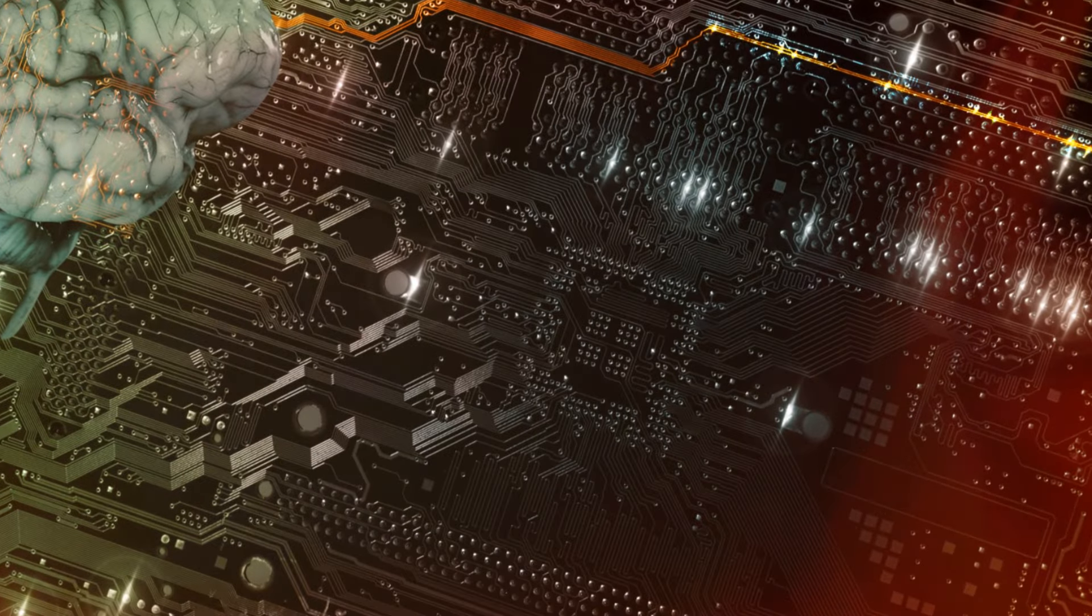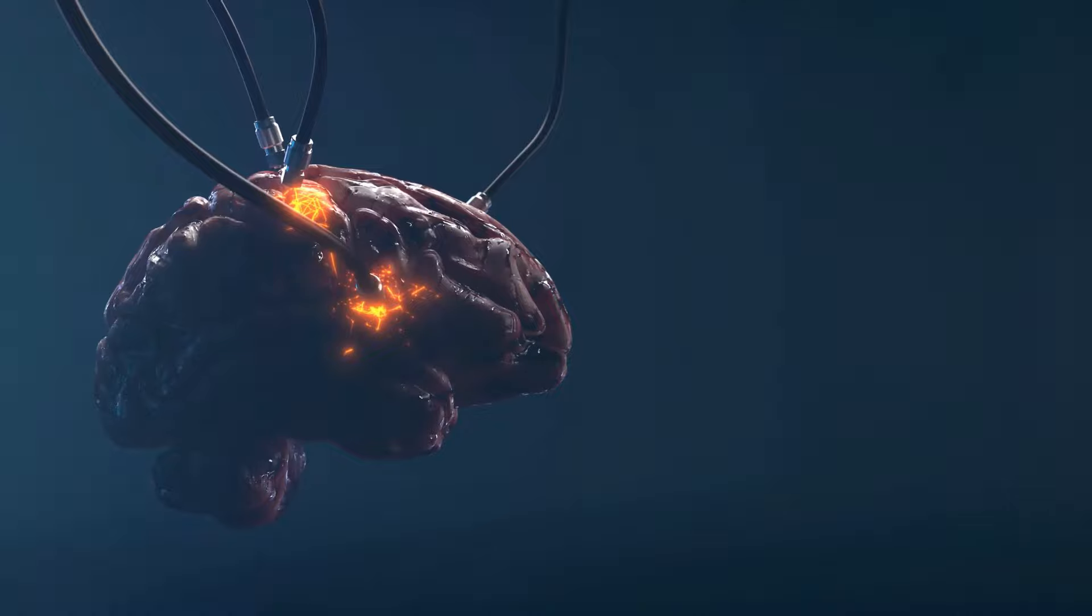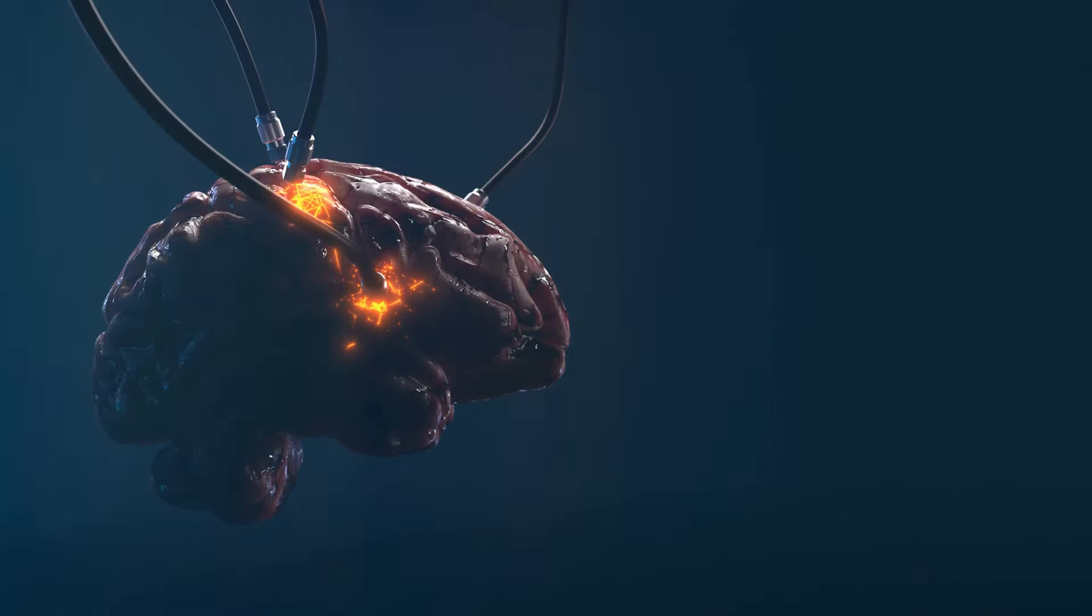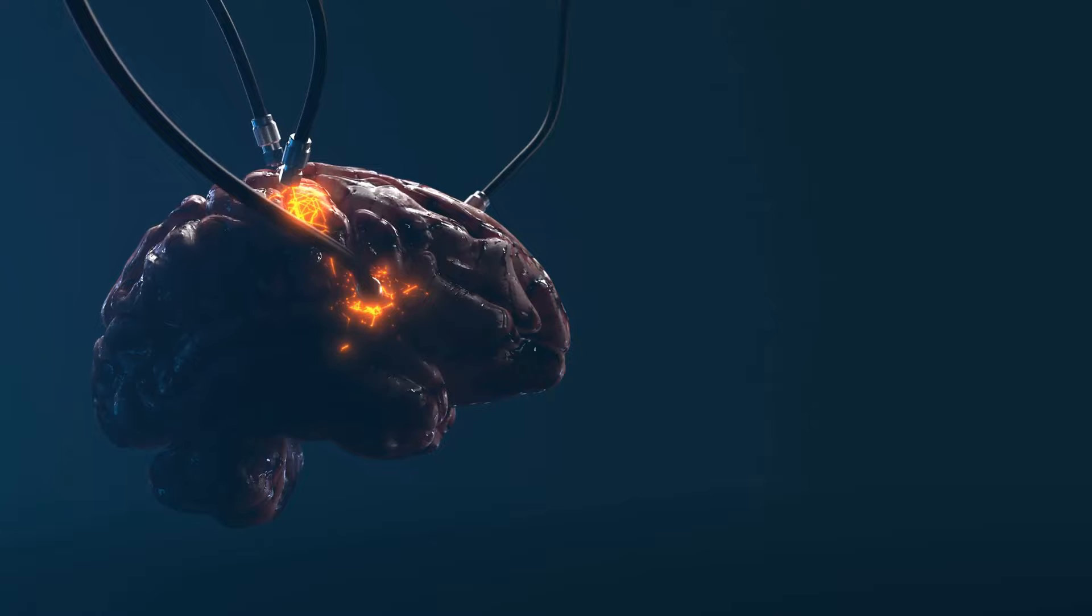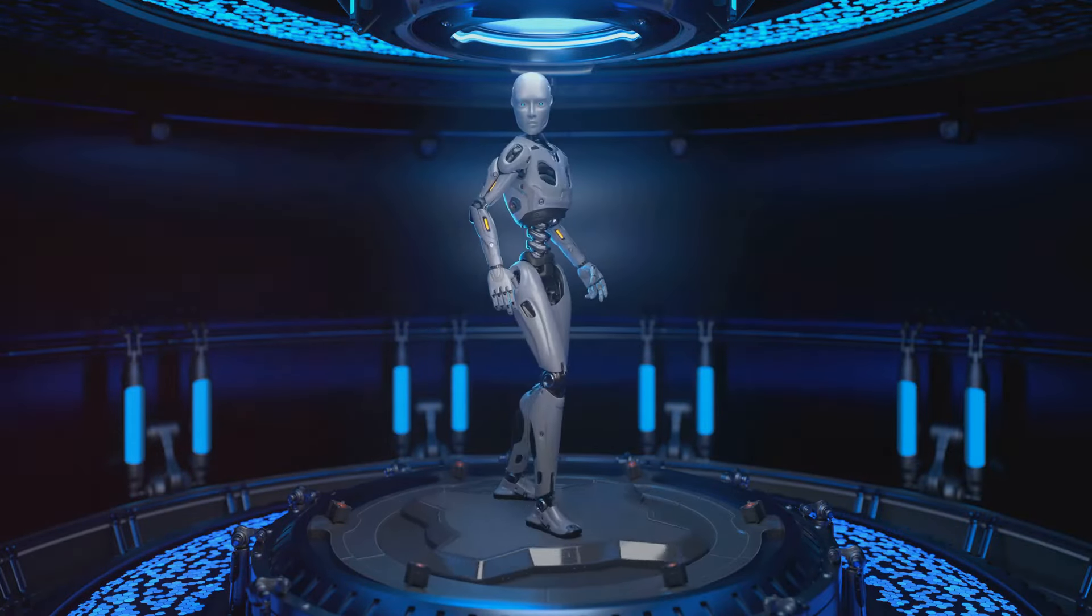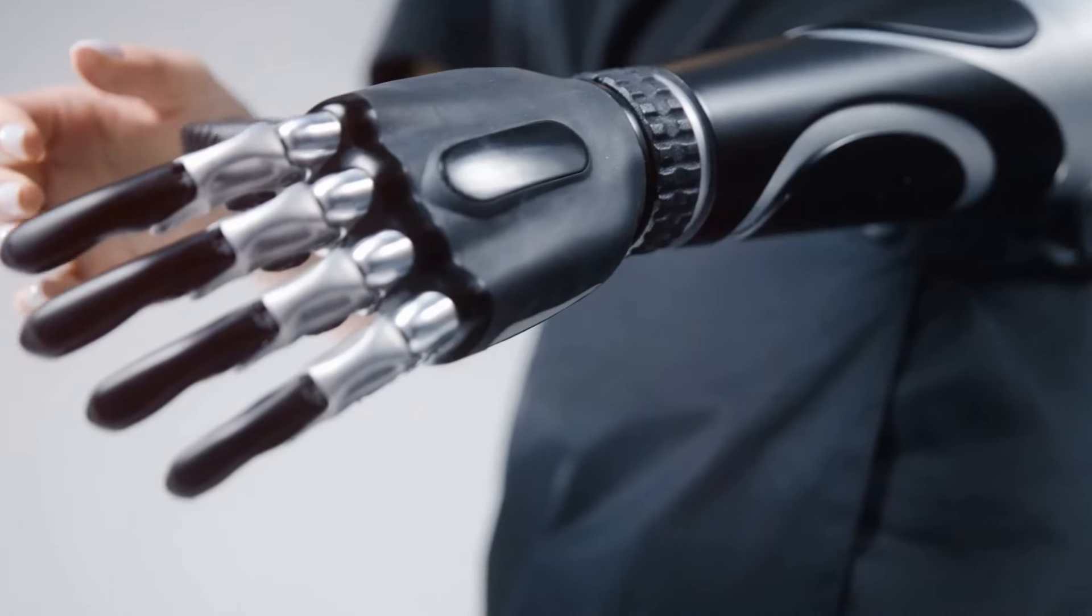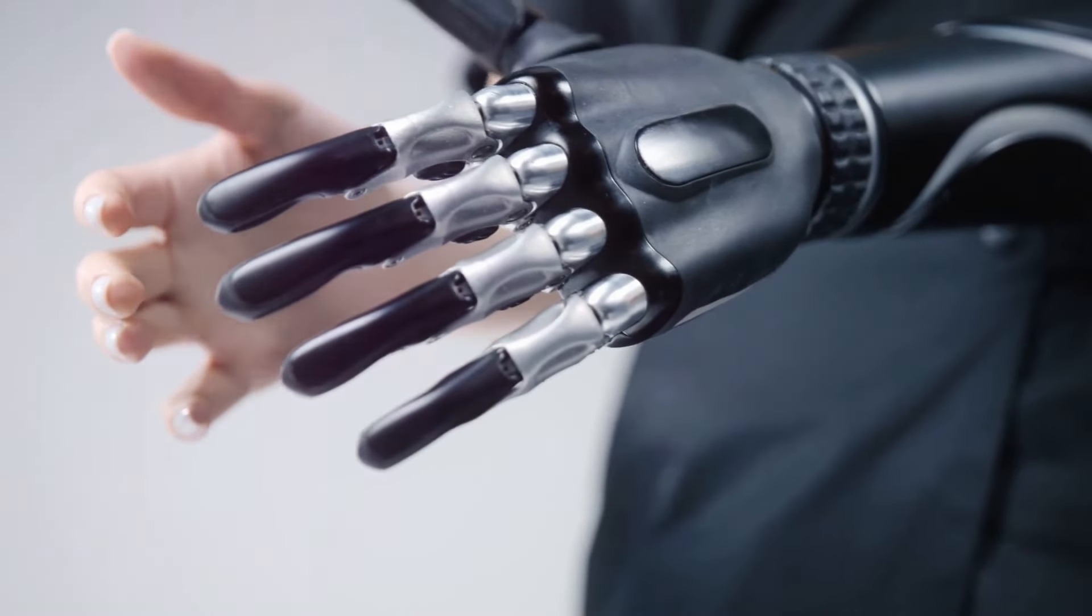one promising technology involving brain-computer interfaces has captured the world's attention: Neuralink, a startup company spearheaded by Elon Musk, has the potential to revolutionize our relationship with technology, blurring the lines between human and machine in unprecedented ways. Imagine a world where individuals with paralysis can control prosthetic limbs with the power of thought, where the blind can see through artificial eyes connected directly to their brains. Human trials are expected to begin soon, raising both excitement and ethical concerns about the future of this transformative technology.